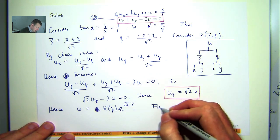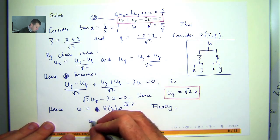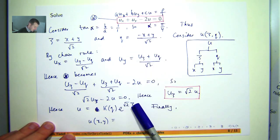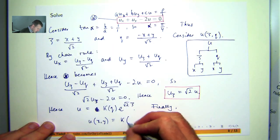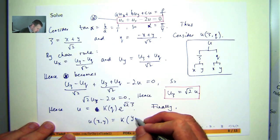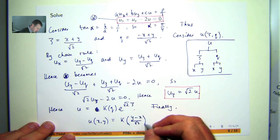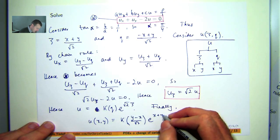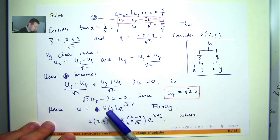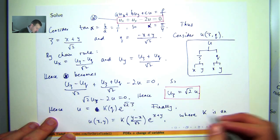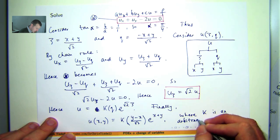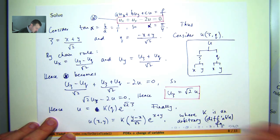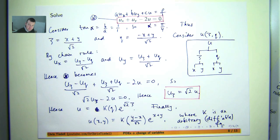Let's make this a little cleaner. When we have root 2 multiplying through, the root 2 cancels, and we get the following final expression. I'll just make a little note that k here is an arbitrary but differentiable function. So we've solved the problem.